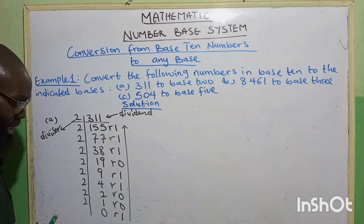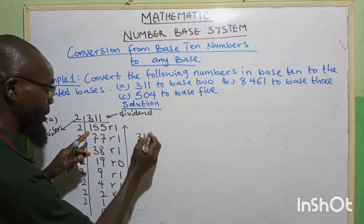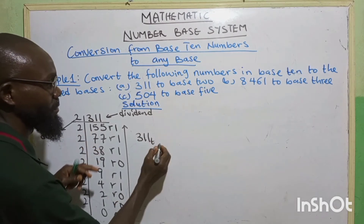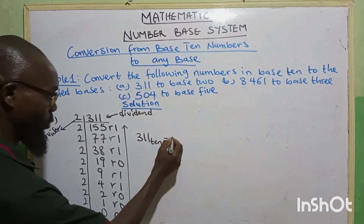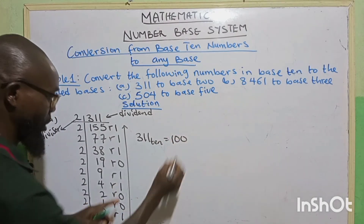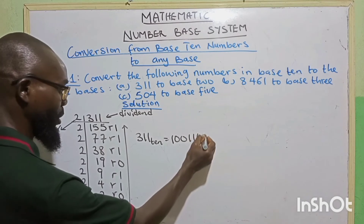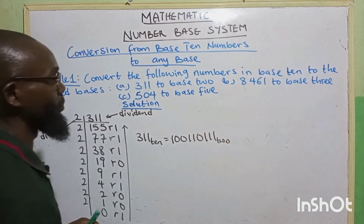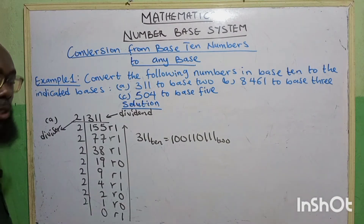Then we read from the bottom up, meaning 311 base 10 is equal to 100110111 in base 2. So we have successfully converted 311 base 10 to base 2.